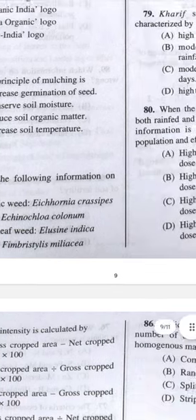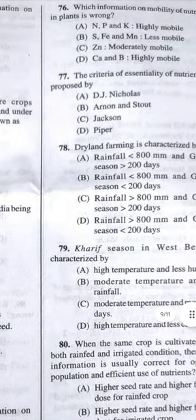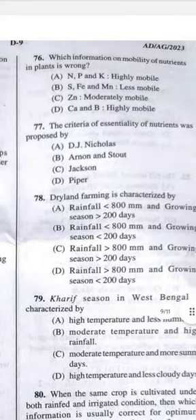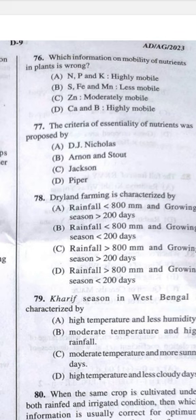Question 76: Which information on mobility of nutrients in plants is wrong? Answer D — calcium (Ca) deficiency appears in terminal buds; it is not highly mobile, it is very less mobile or immobile.